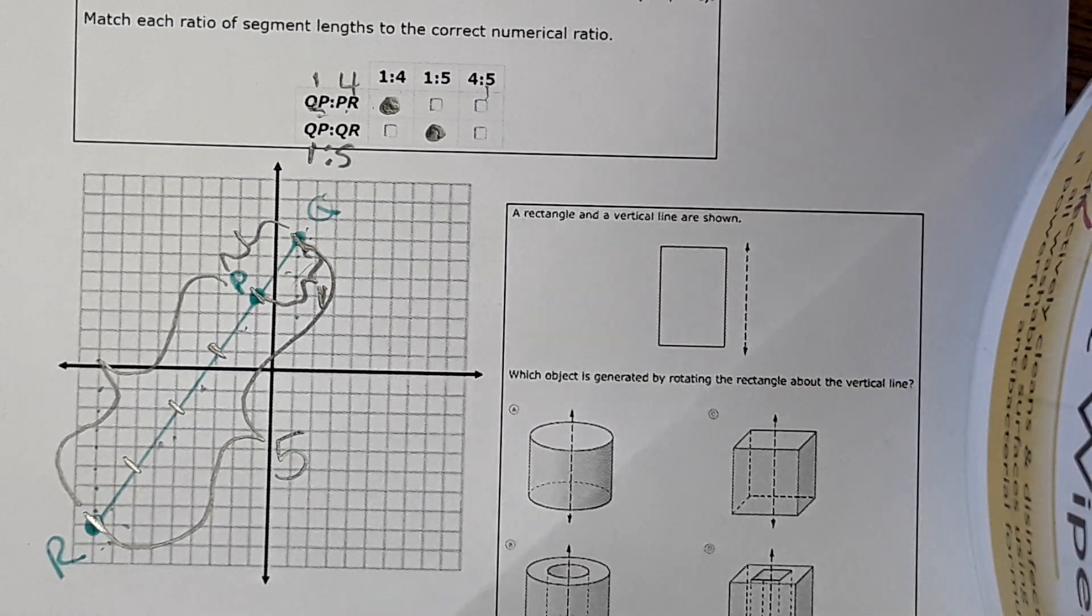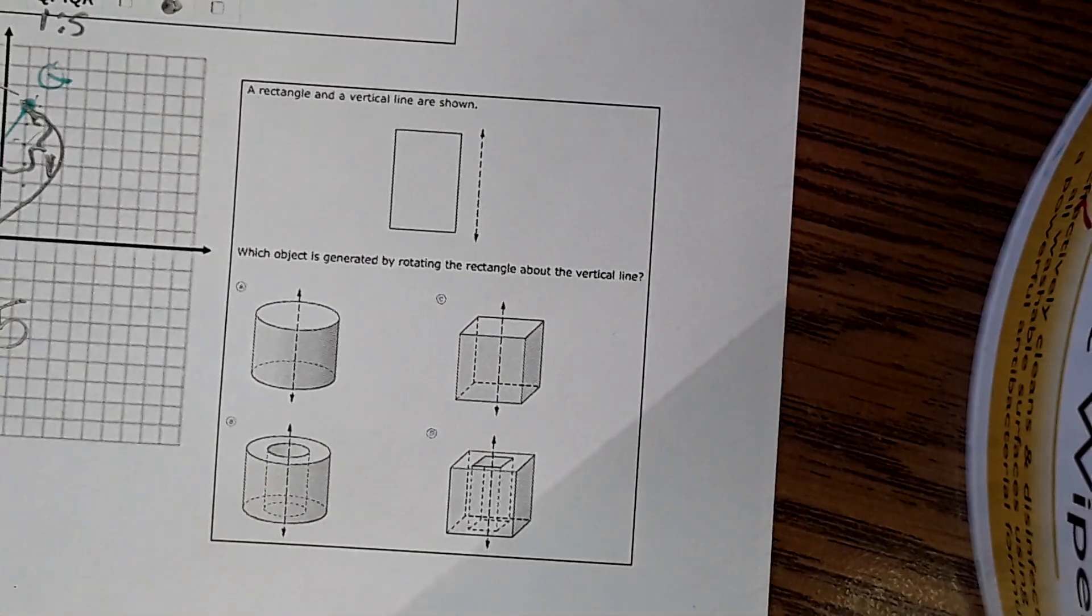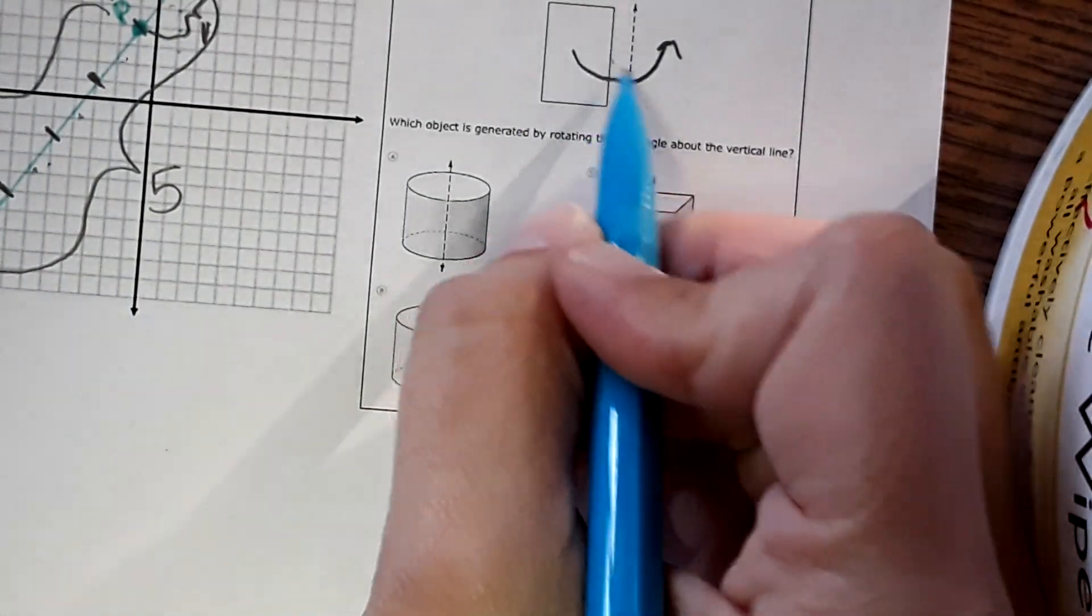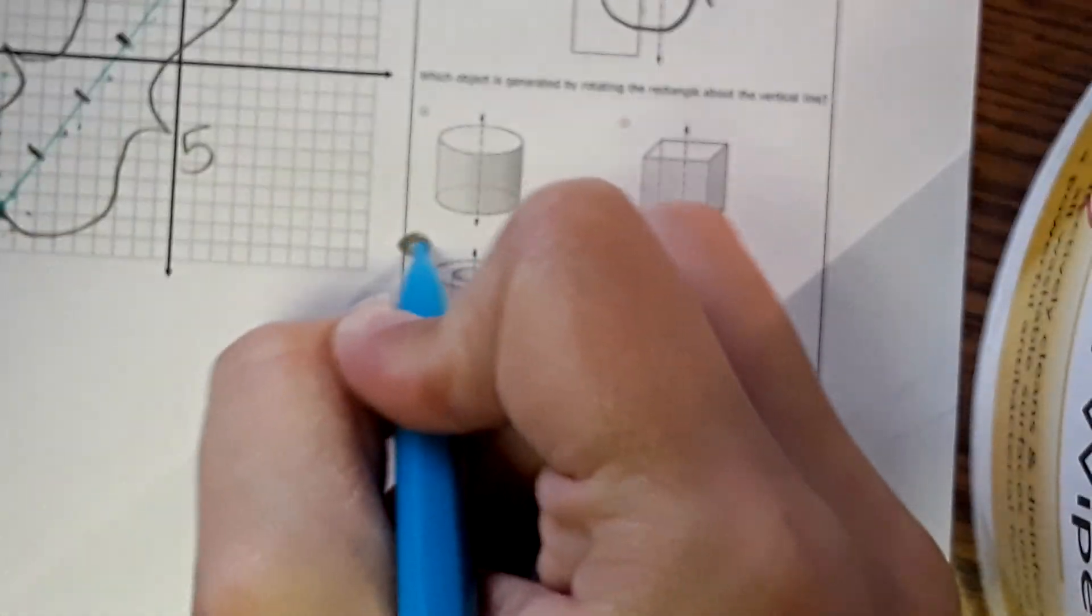Next one, well, this one's pretty easy. We've done this one a lot. It's saying if this rotates around here, what kind of shape would it make? There would be a hole in the middle because it's not right up against that line. So the answer would be B.